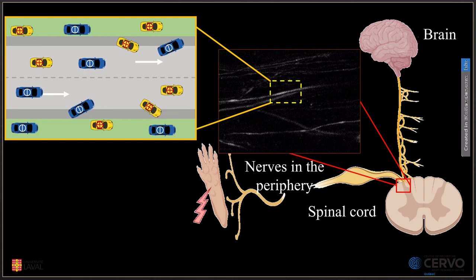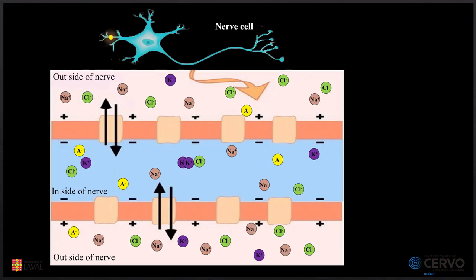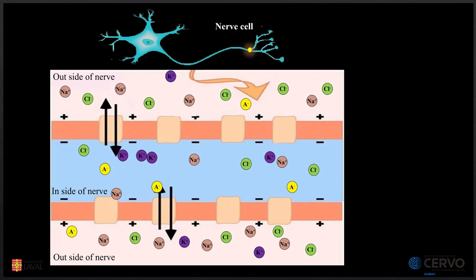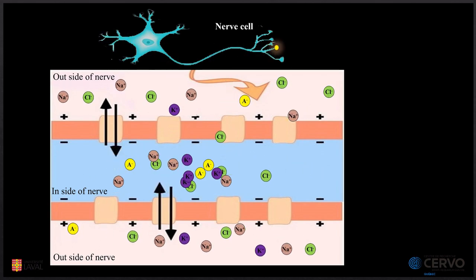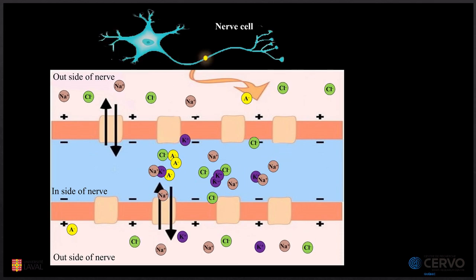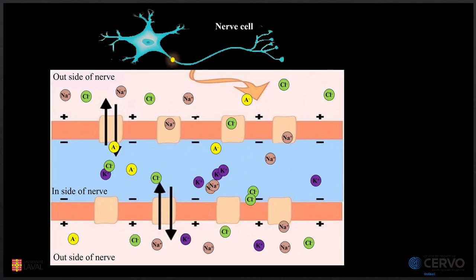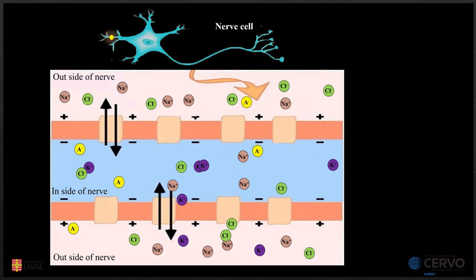But honestly, we don't have cars in the nerves. We have ions, positive and negative, like chloride, sodium and potassium. These ions move alongside the nerve and they go inside and outside of the nerve and they transfer the information.